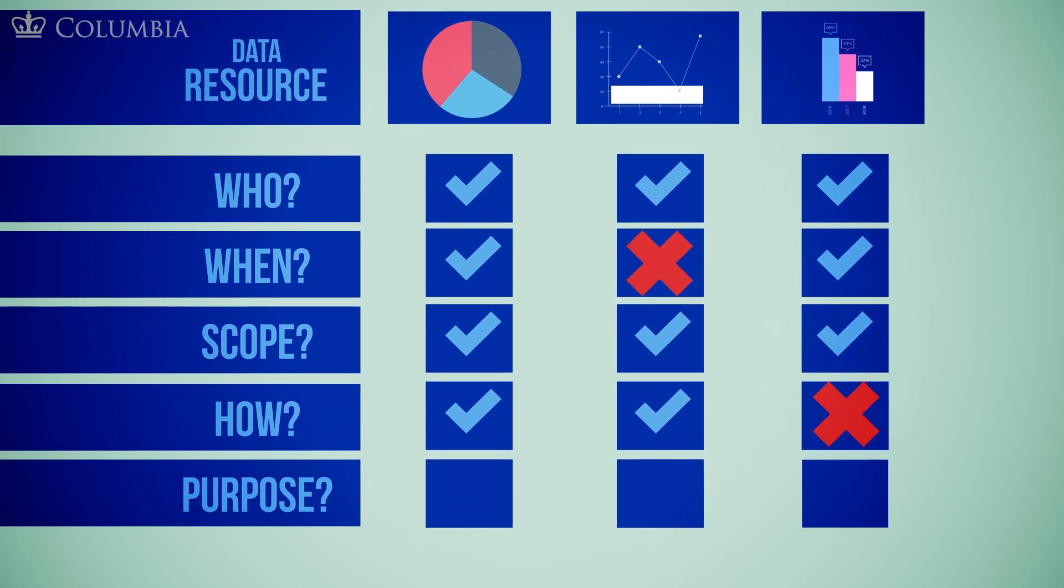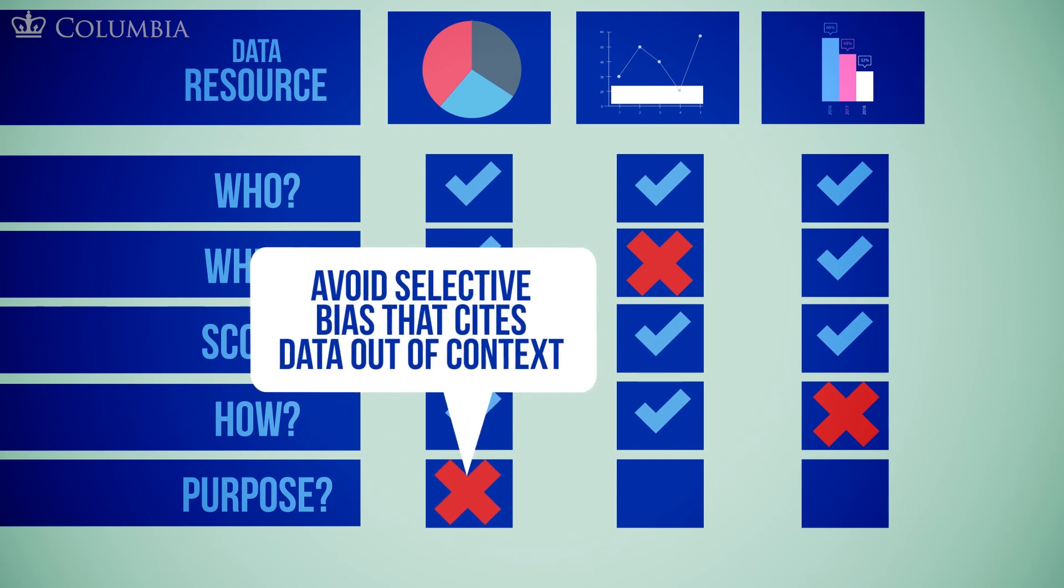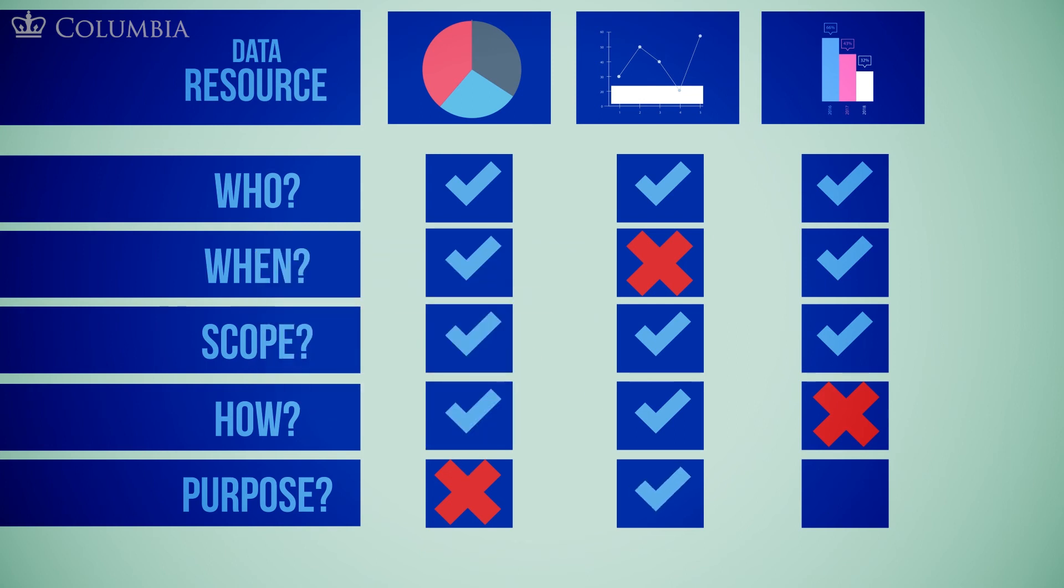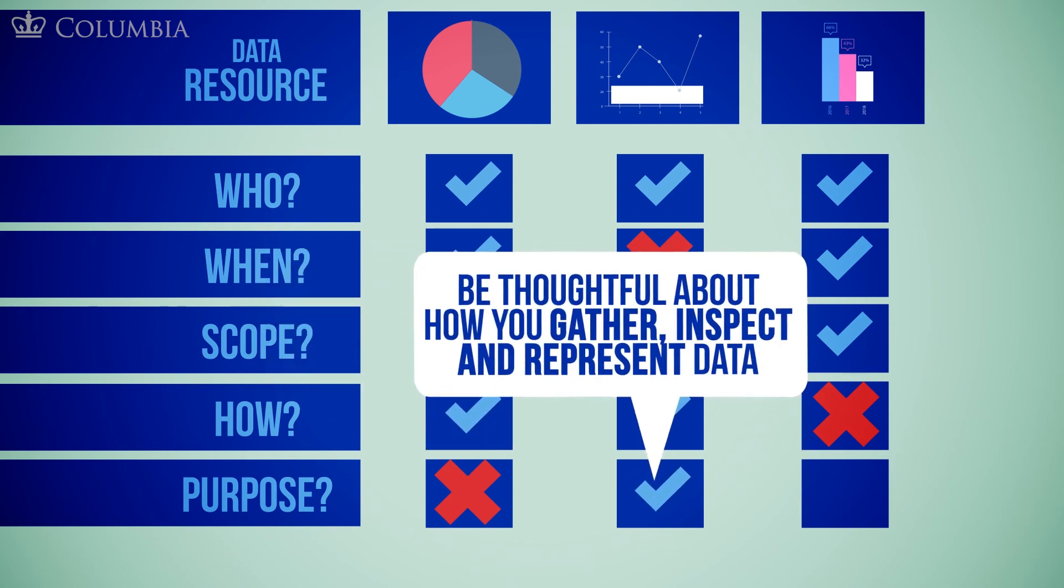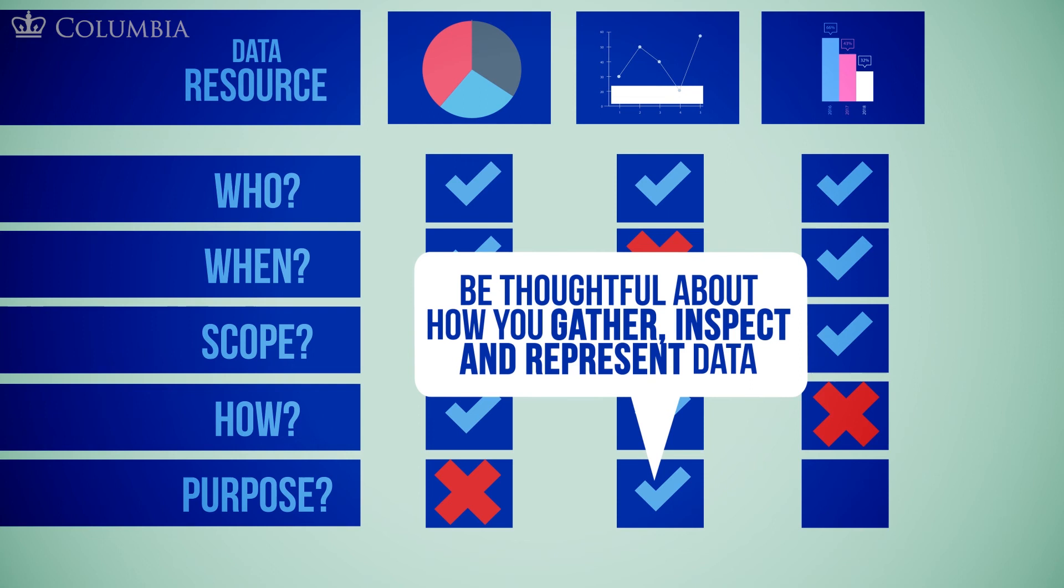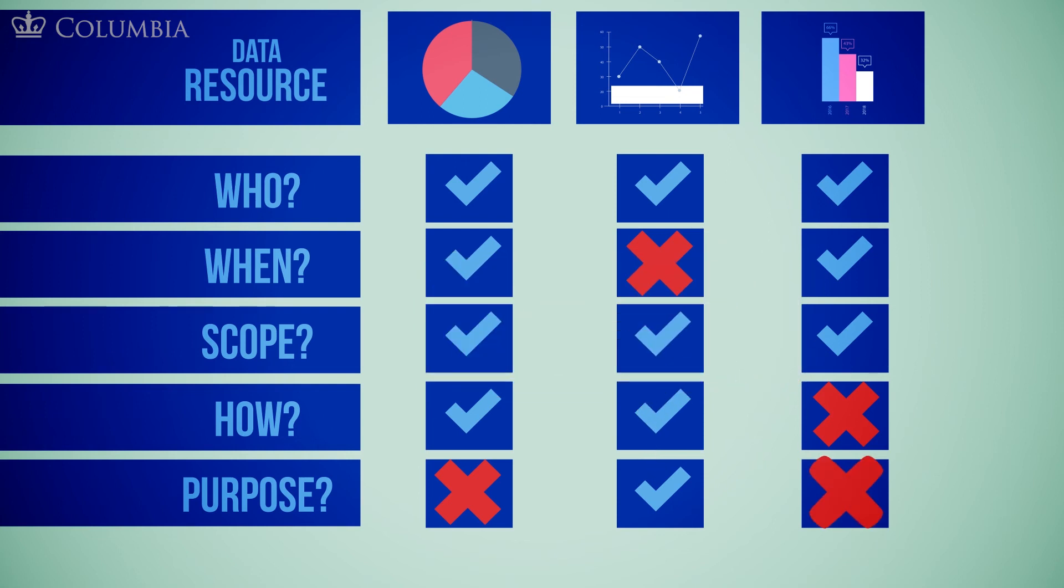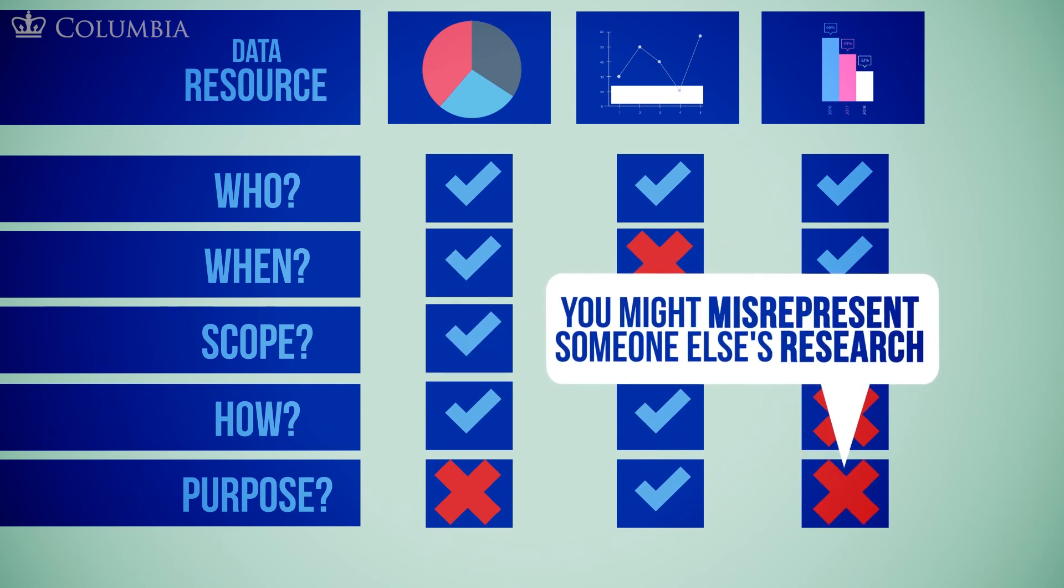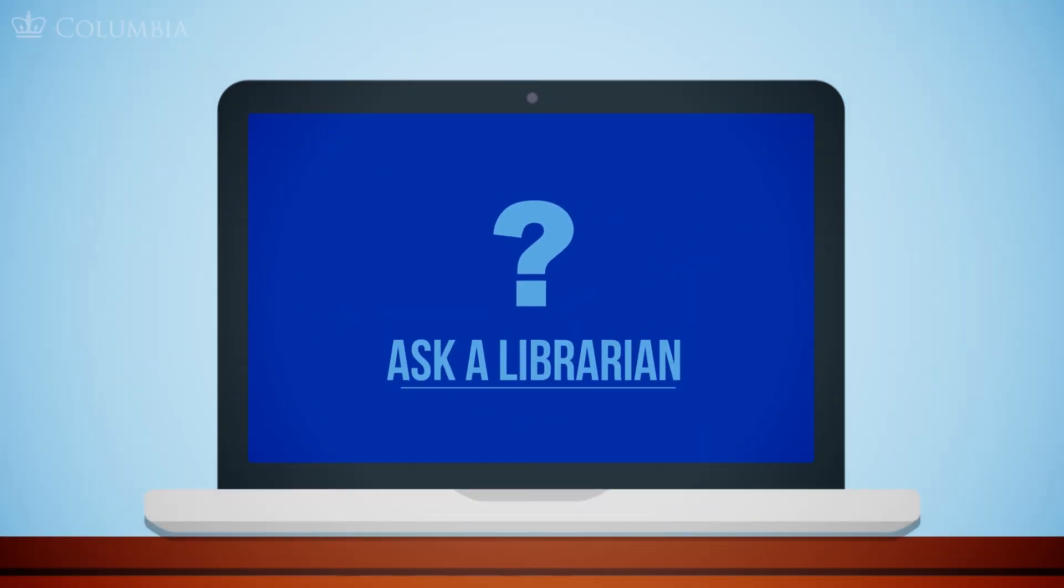This can vary greatly, from statistics about people and communities around the world to scientific lab results, so avoid selective bias that cites data out of context. When using data you've found elsewhere, be thoughtful about how you gather, inspect, and represent that data. Otherwise, you might misrepresent someone else's research. If you aren't sure how to use a data set, ask.